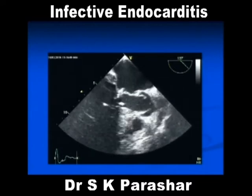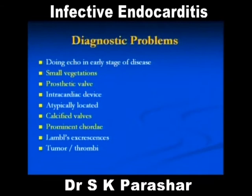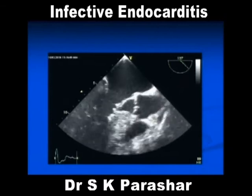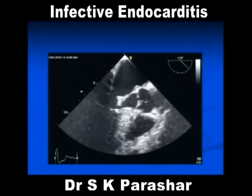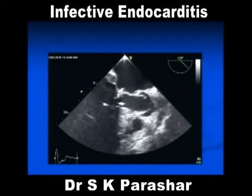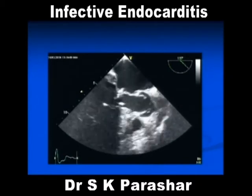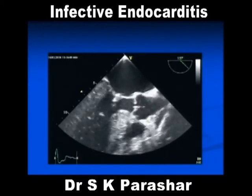This is known as Lambl's excrescences. These are small filamentous structures — do not get confused. These are very small filamentous structures attached to the aortic valve and they can be confused with vegetation; they are much better seen on transesophageal echo. We did this echo because there was a patient of hypertrophic obstructive cardiomyopathy with a vegetation, and you see the aortic valve with a linear structure — usually known as Lambl's excrescences.